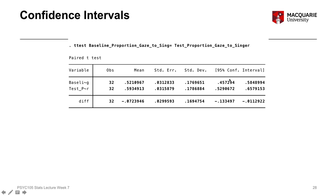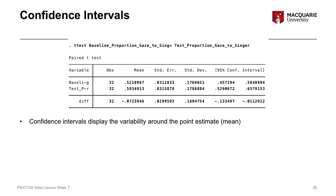Confidence intervals give us a range of scores around the mean where we're pretty sure the real population mean will lie. They represent the variability around the actual mean score, which we can call the point estimate. A point estimate is a specific number.